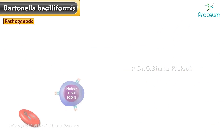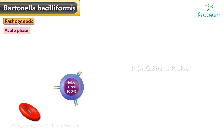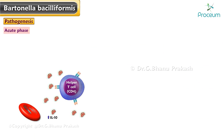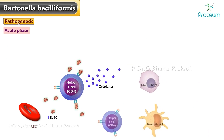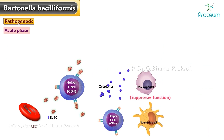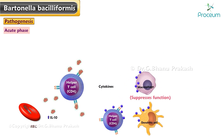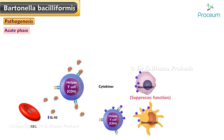In the acute phase, the organism causes a substantial increase in interleukin-10 secretion by erythrocytes, which attenuates cytokine production and suppresses the function of certain immune cells, including T helper cells, macrophages, and dendritic cells.